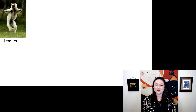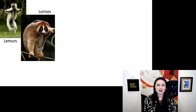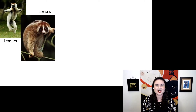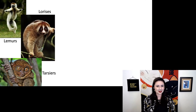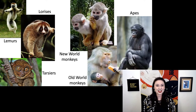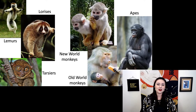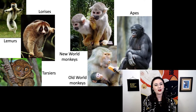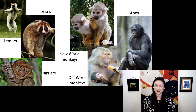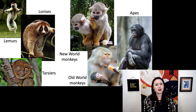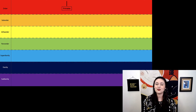First we have our lemurs, then we have our lorises, our tarsiers, new world monkeys, old world monkeys, and finally our apes. But of course, some of these are more closely related to each other than others, so we can put this all into a tree.